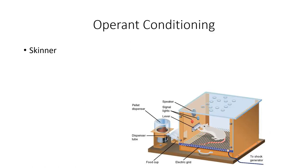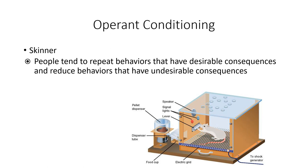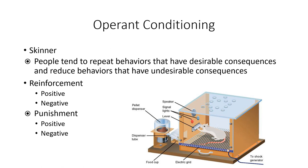Next, operant conditioning with Skinner. Skinner believed that people tended to repeat behaviors that have desirable consequences and reduce behaviors that have undesirable consequences. We talk about this in development because there's a lot of evidence for this being true, at least to a limited extent. In the classic demonstration, you have a rat in a cage where pushing the lever is the trigger and food is the outcome — you're trying to get the rat to repeat pushing the lever. Within this framework you have two different components: reinforcement and punishment.